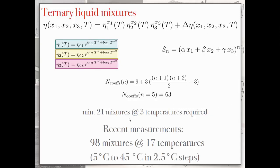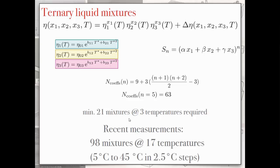Using a fifth-order Bézier triangle requires 63 coefficients, which is quite a lot, but this requires 21 mixtures, which you have to determine at least at three temperatures. But what we did, and with the state-of-the-art equipment, this is not very difficult to do, is we mixed 98 mixtures, which we measured at 17 temperatures.